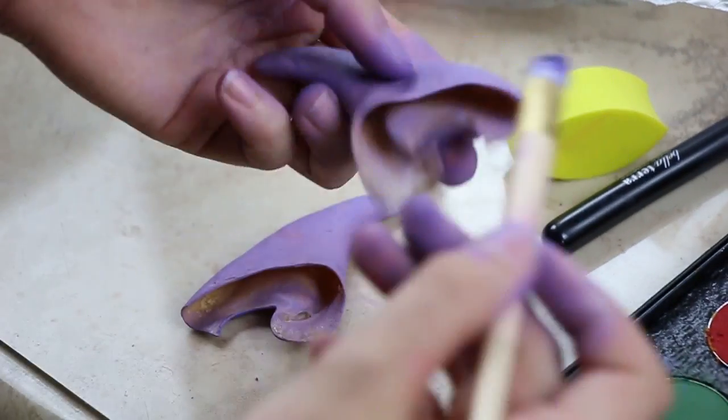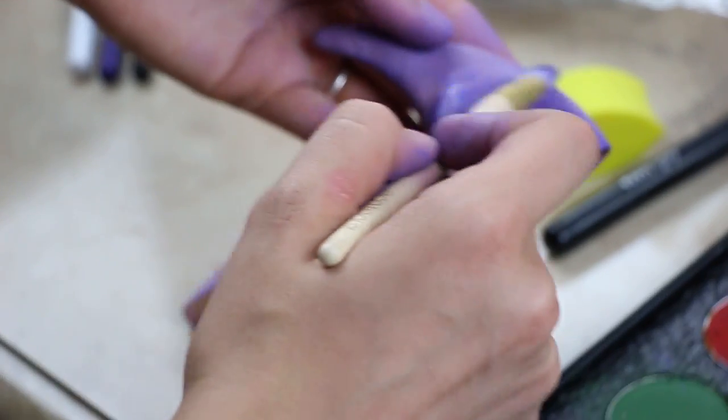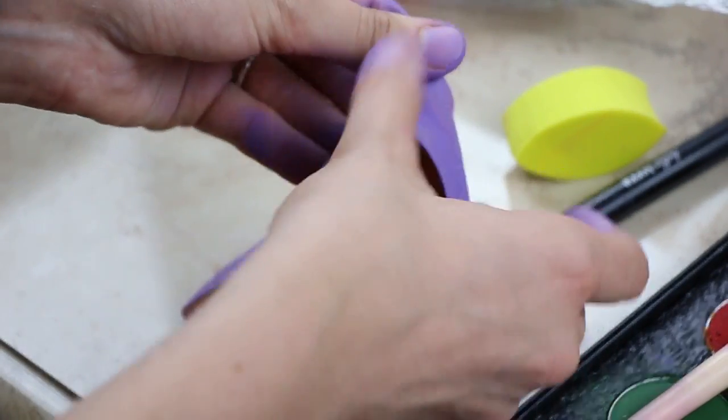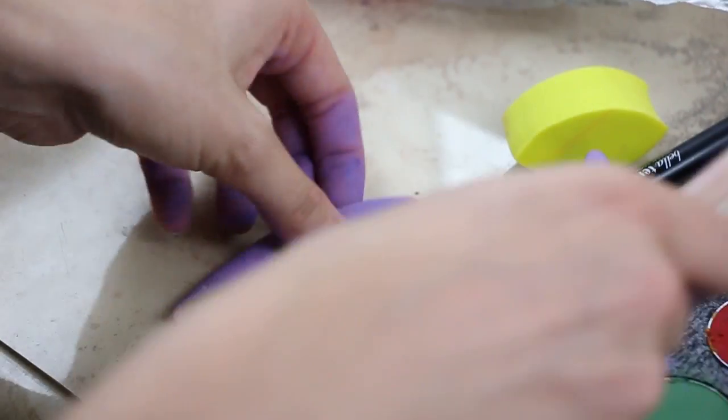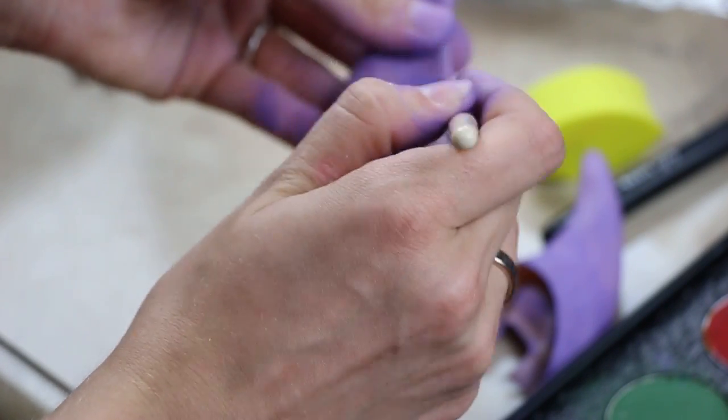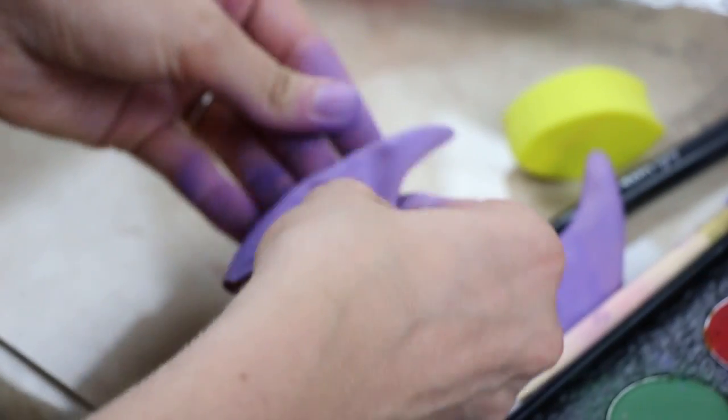And then I'm also doing the back bottom of them where they would connect to your head, because that's where a lot of your blood flow is in your ears. And towards the top they're more just cartilage and paler colored.